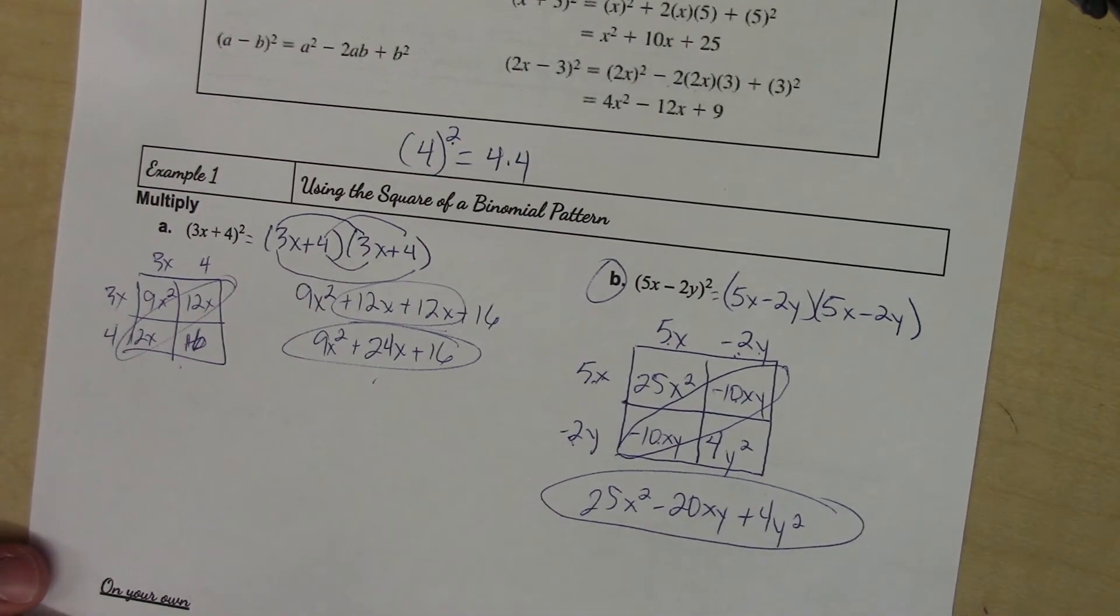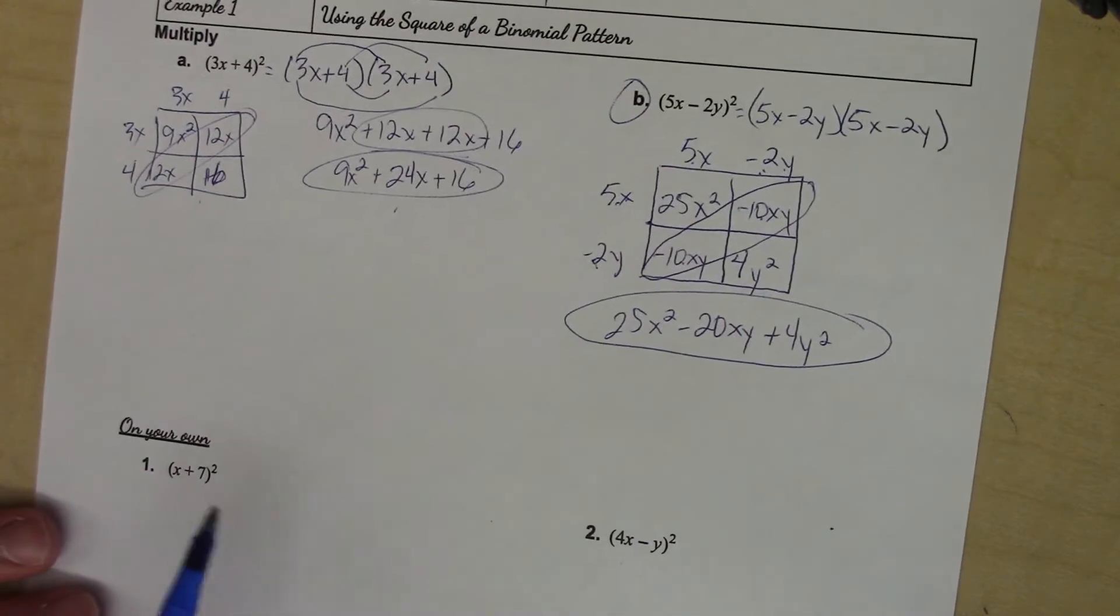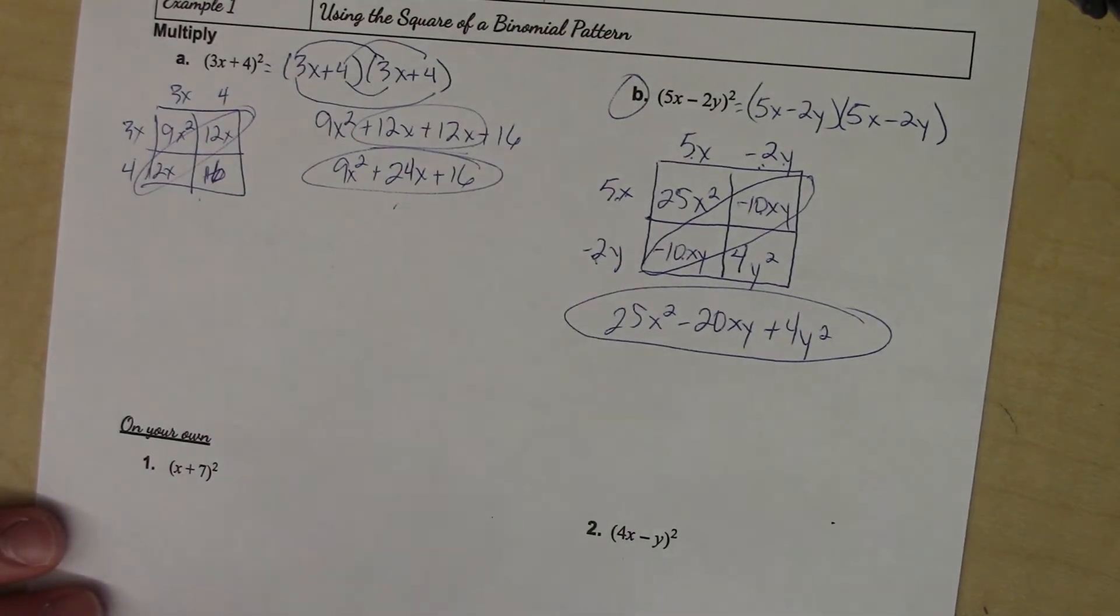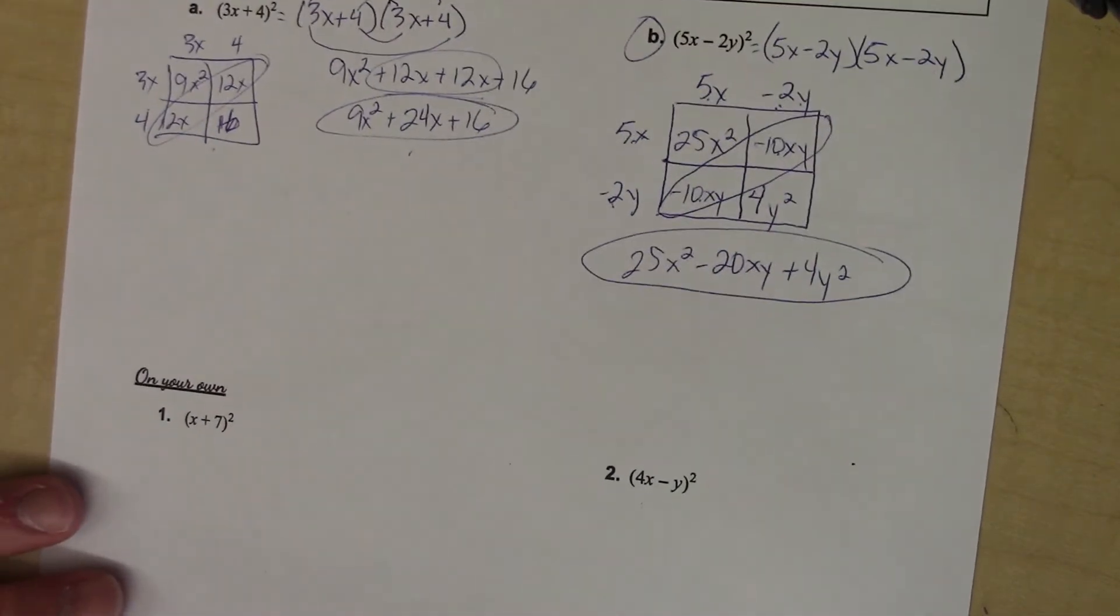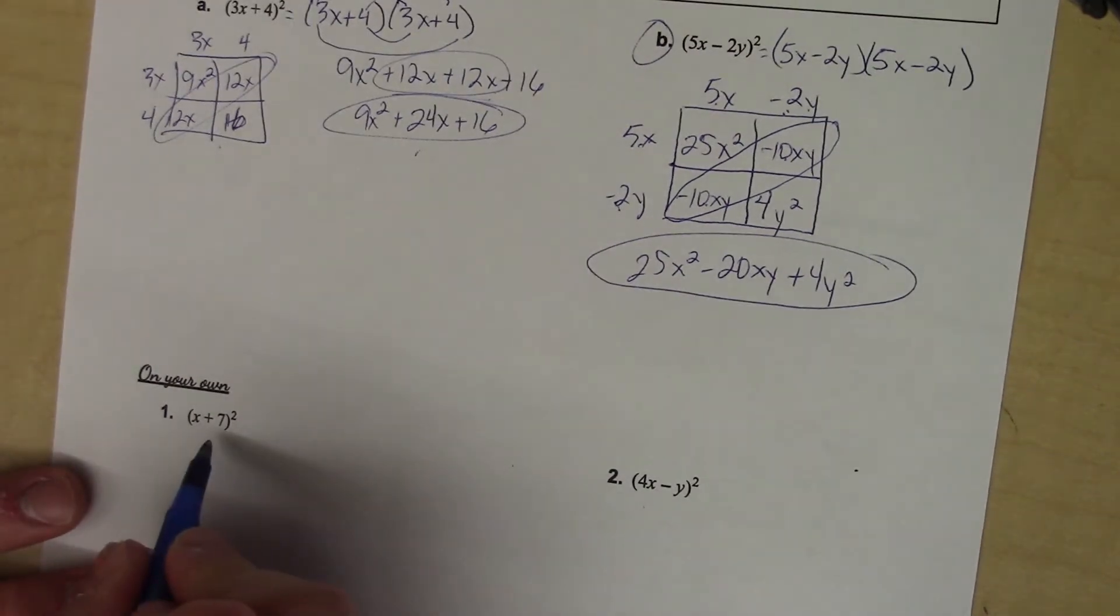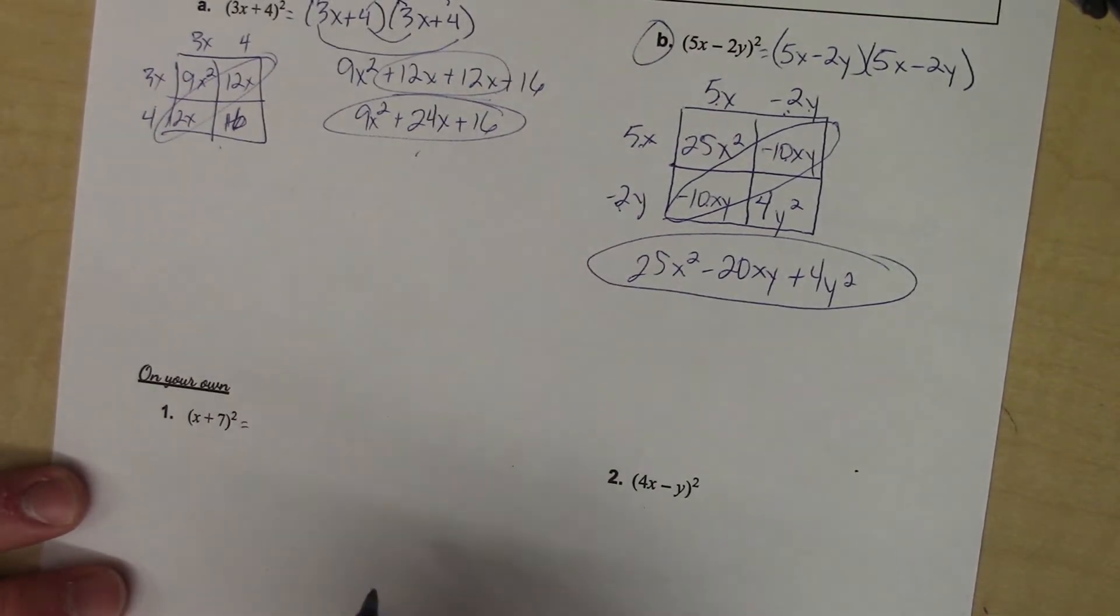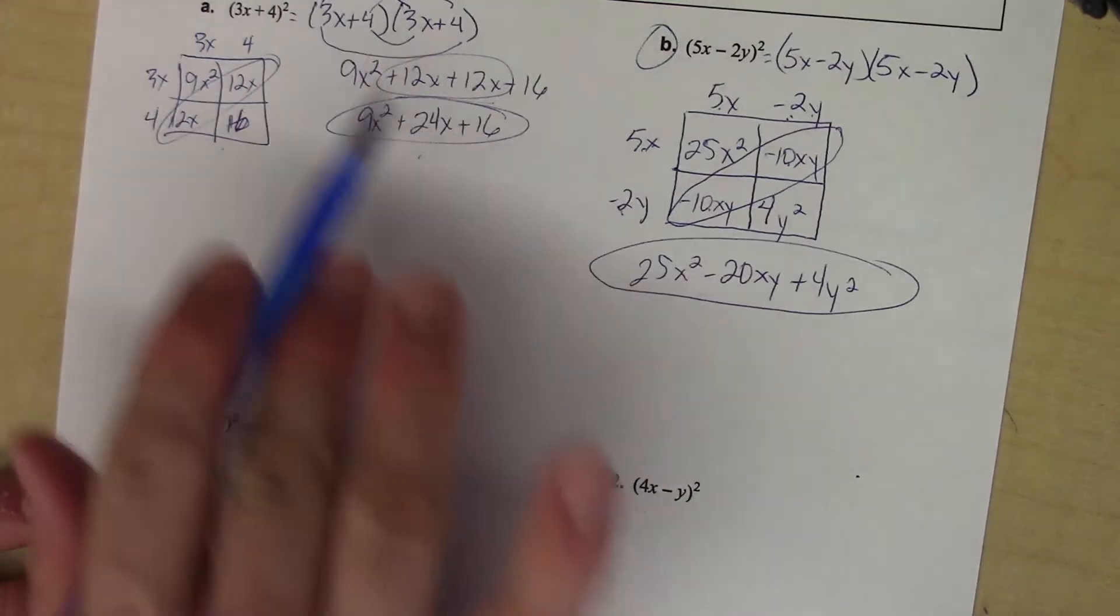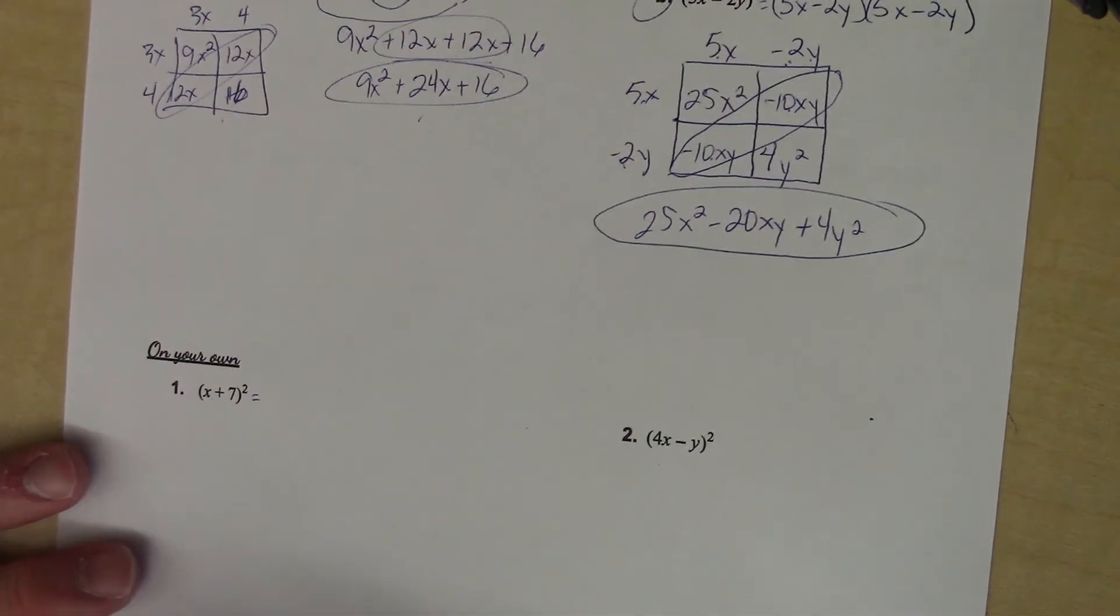I think you can do this without me. Let's have you guys try these two problems, one and two. Press pause, remember what squared means, so write it out that way first, and then FOIL it out, whether you use FOIL or the box method. Press pause, try it now.